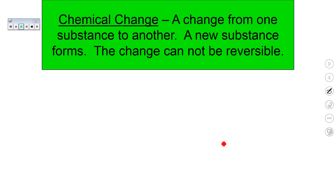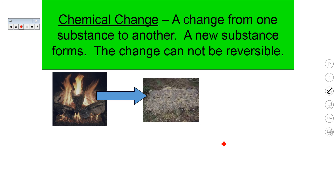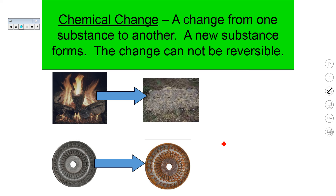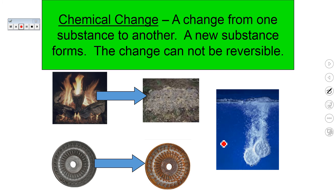A chemical change is a change from one substance to another. A new substance forms and the change cannot be reversed. Burning a log, for example, turns the log into a new substance — ash. You cannot turn that ash back into the intact wood. Rusting of metal: once the metal rusts and turns into iron oxide, you cannot reverse that orange rust back into the shiny metal. You can scrape it away and reveal a new layer of metal, but you can't turn that rust back into the original metal. Bubbling or effervescing is an example of a chemical change — it's the release of a gas in a reaction. You are creating a new substance, creating a gas, and that change cannot be reversed.